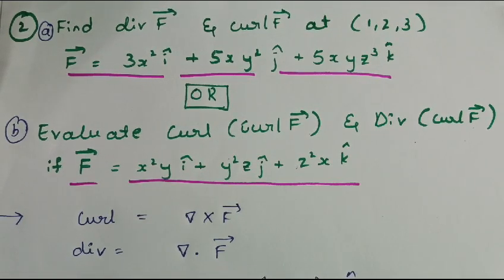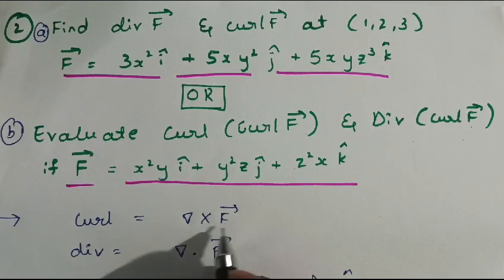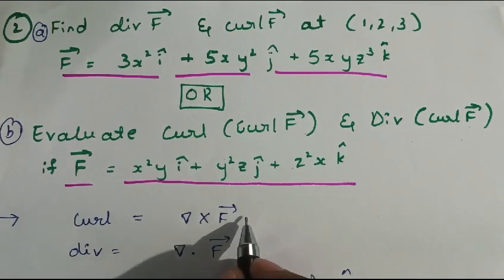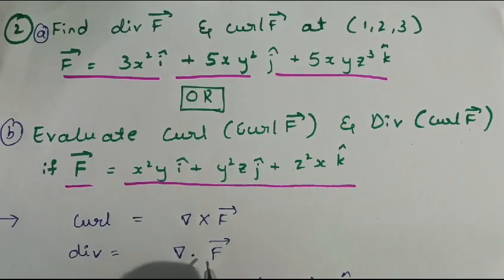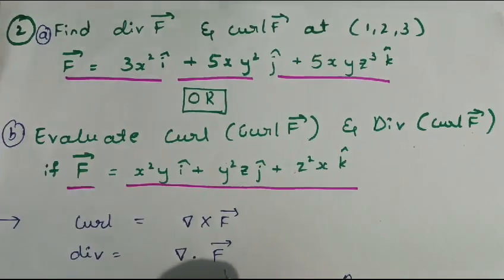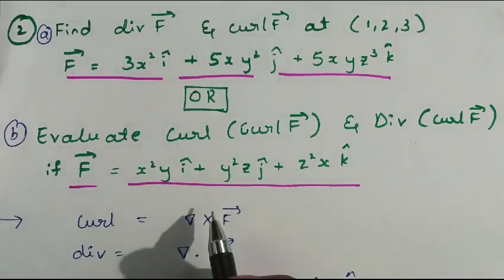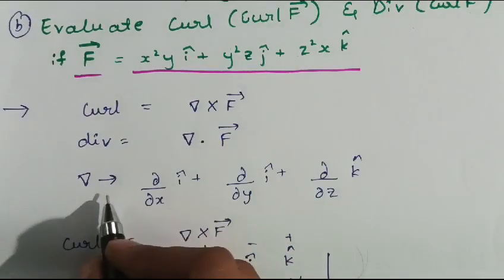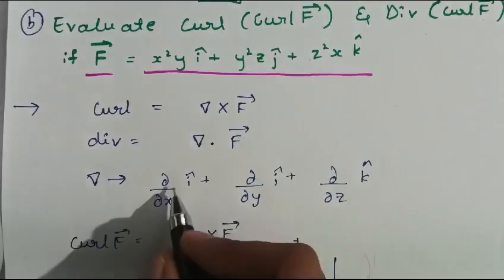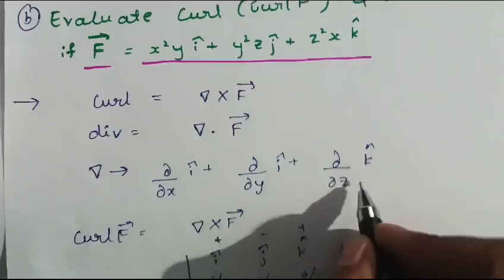We know that curl of f is the cross product, written as del cross f, and divergence is the dot product, written as del dot f. The del operator is defined as: del equals (∂/∂x)î + (∂/∂y)ĵ + (∂/∂z)k̂.